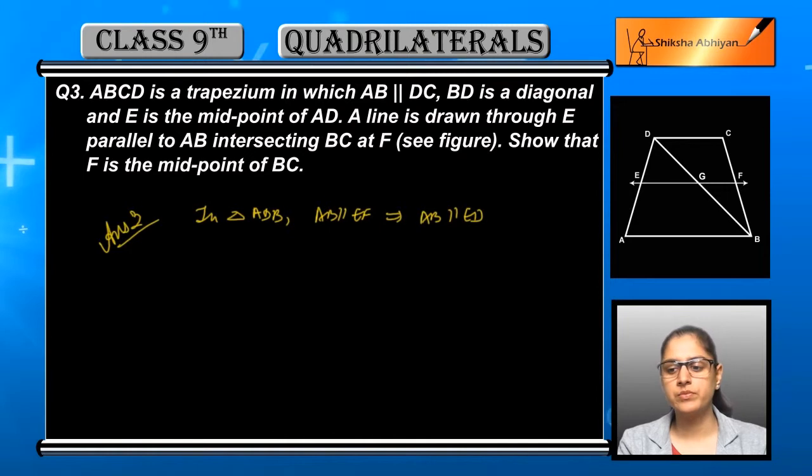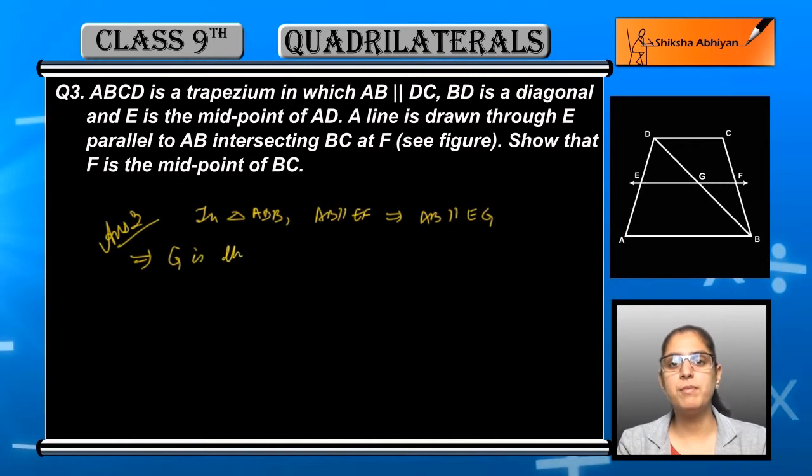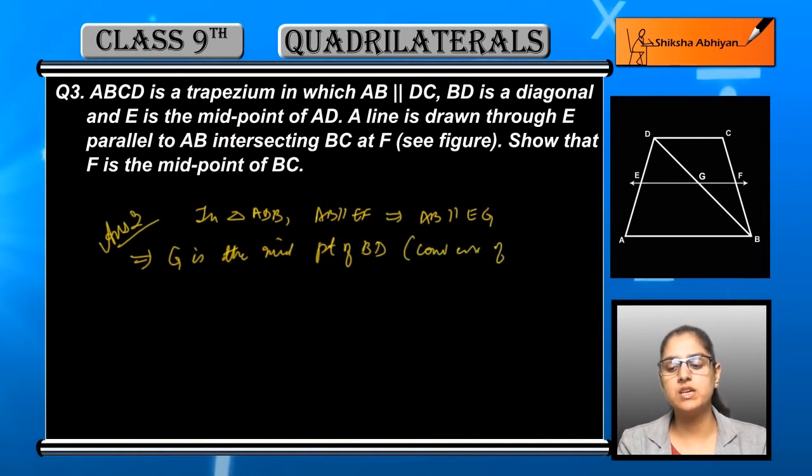triangle ADB. In triangle ADB, it is given that AB is parallel to EF. And if AB and EF are parallel, then we can say that AB and EG are also parallel. Now if AB and EG are parallel, and G is the midpoint - G is given as the midpoint